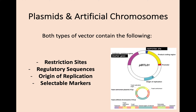Whether it's a plasmid or an artificial chromosome, both types of vector contain the same similar components: restriction sites, which we've already discussed; regulatory sequences; an origin of replication; and selectable markers. These are quite important, so make sure you take notes and are familiar with what they do.